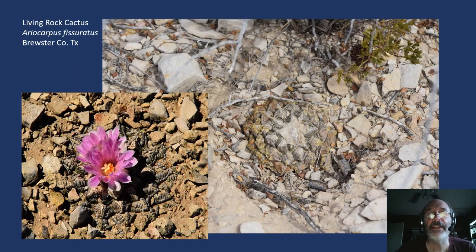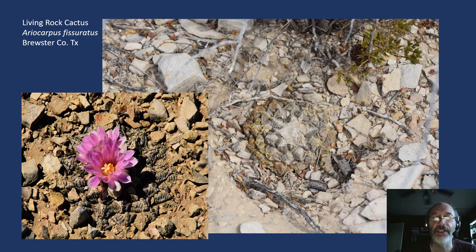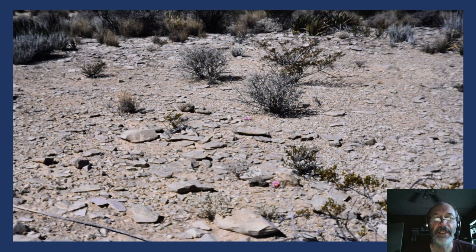One of our more interesting plants is Ariocarpus fissuratus, the living rock cactus. This is a really interesting, very cryptic plant — you can see one on the right side there. It can be quite difficult to find unless you're there in early fall, October, when they're in bloom. If you're there when they're blooming, it makes it much easier to find. In the same habitat we also get Coryphantha echinus and some of the other little coryphanthas.